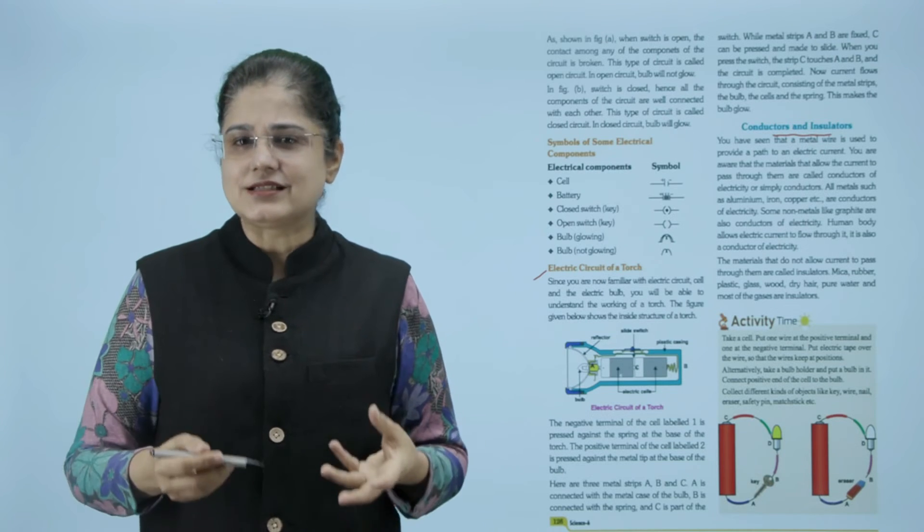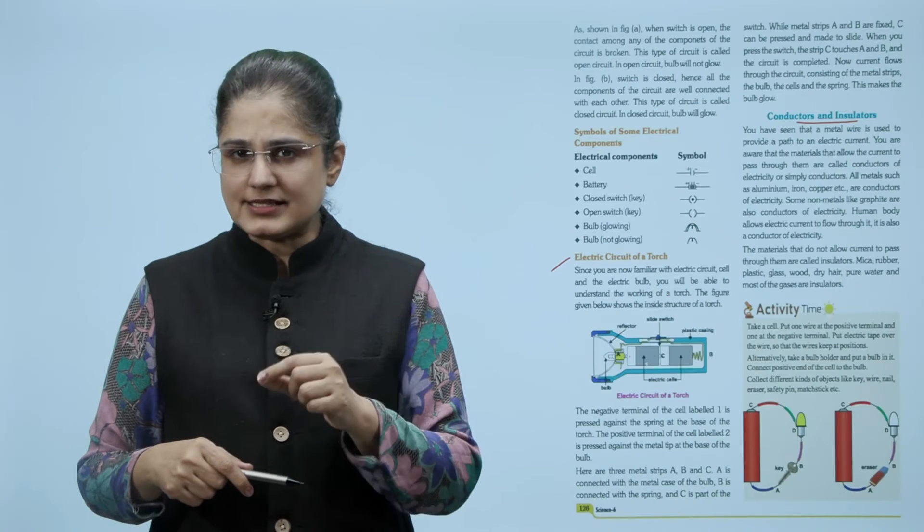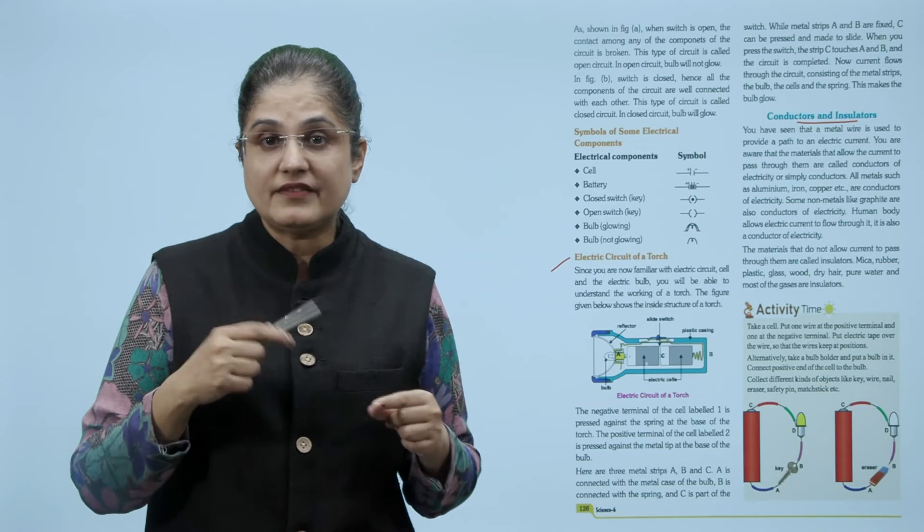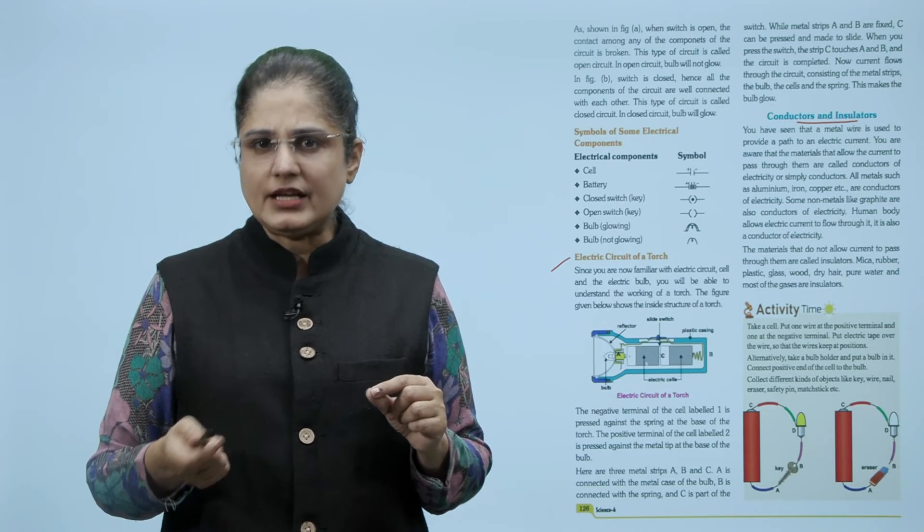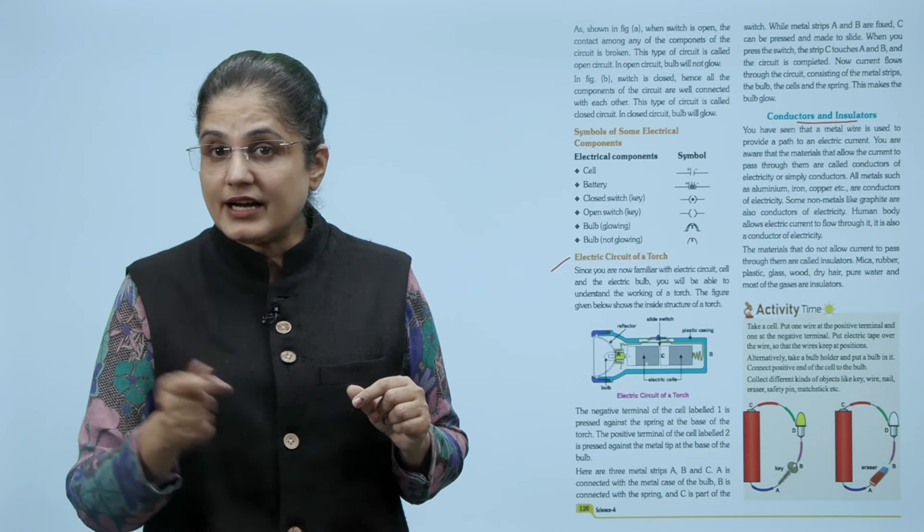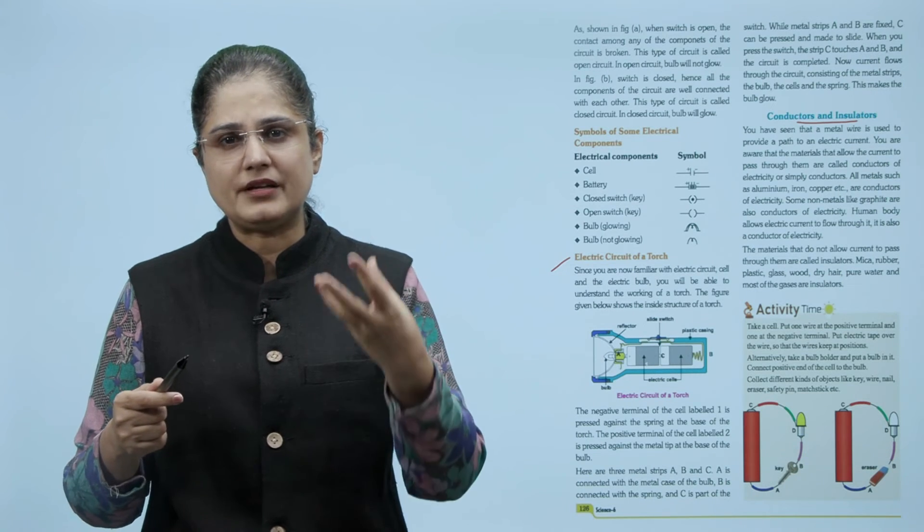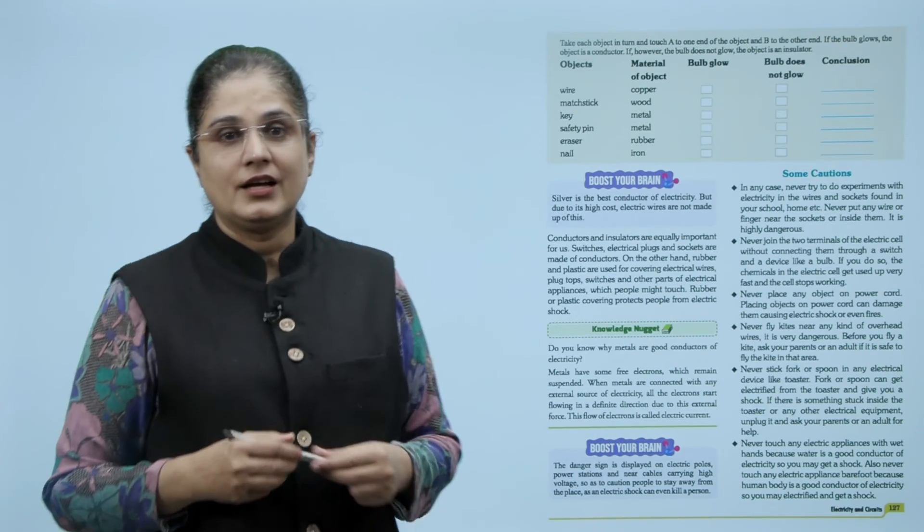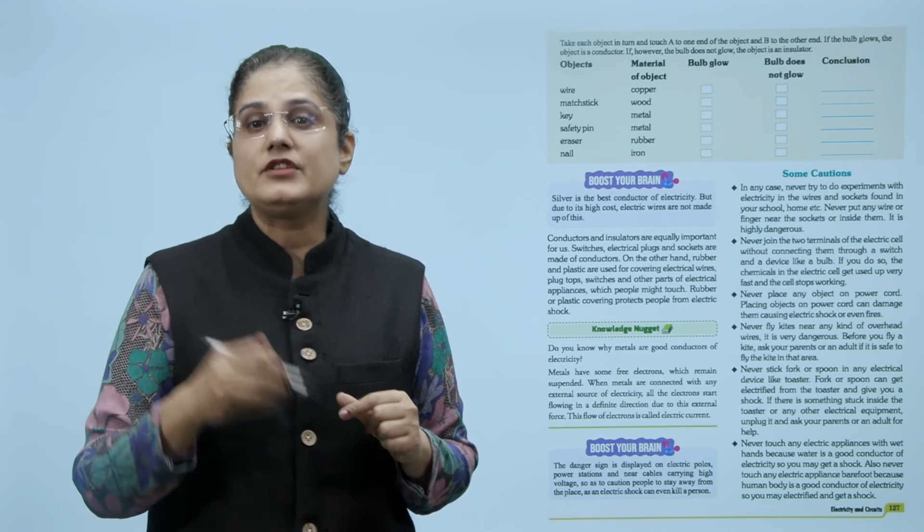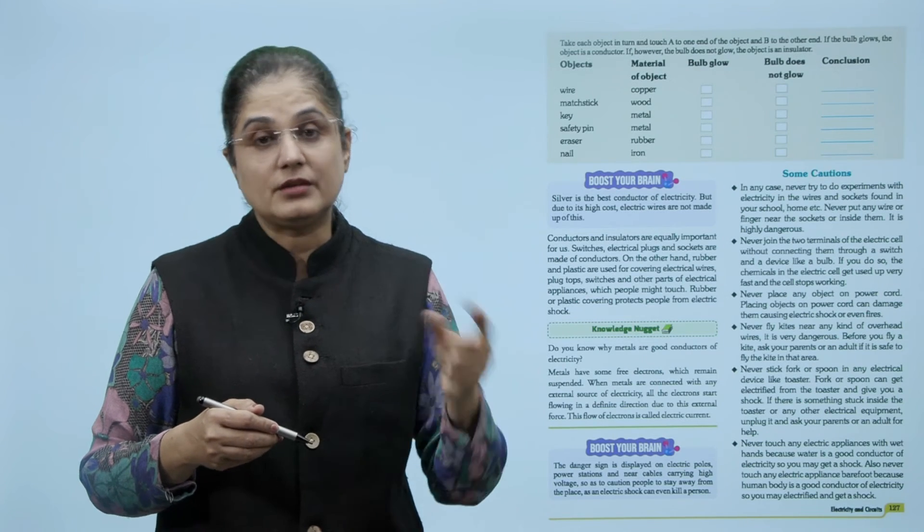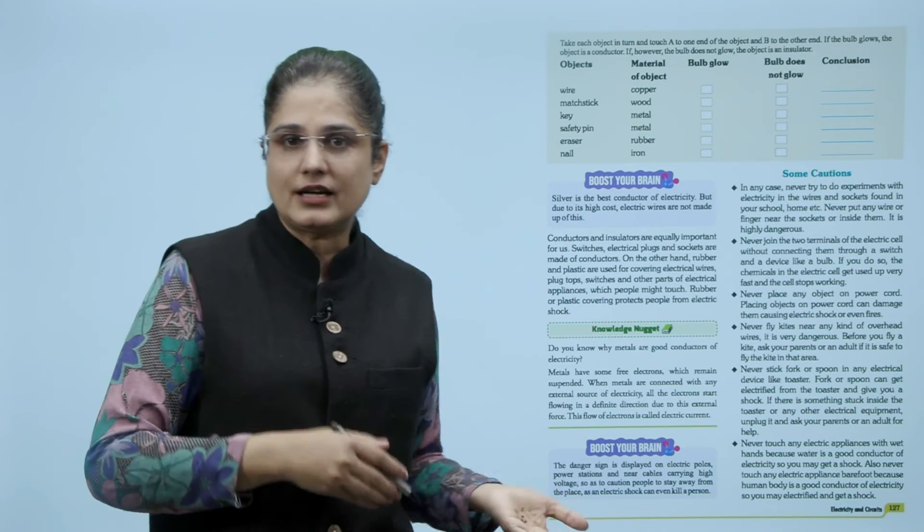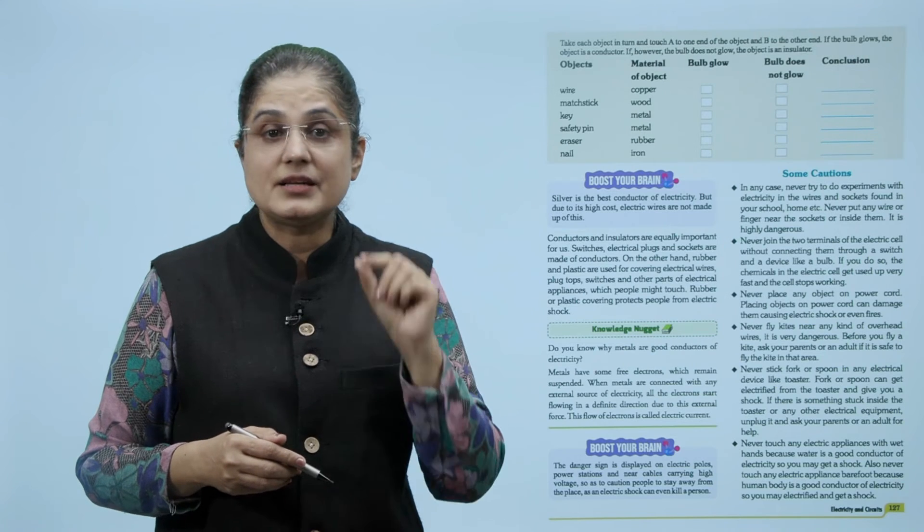Now take a cell. Put one wire on the positive terminal and one at the negative terminal. Put electric tape over the wire so that the wires keep in position. Alternatively, take a bulb holder and put a bulb in it. Connect positive end of the cell to the bulb. Collect different kinds of objects like key, wire, nail, eraser, safety pin, match stick. Now take each object in turn and touch A to one end of the object and B to the other end. If the bulb glows, the object is a conductor. If however the bulb does not glow, the object is an insulator. So now you can find out whether these objects are conductors or insulators. Silver is the best conductor of electricity but due to its high cost, electric wires are not made up of this.